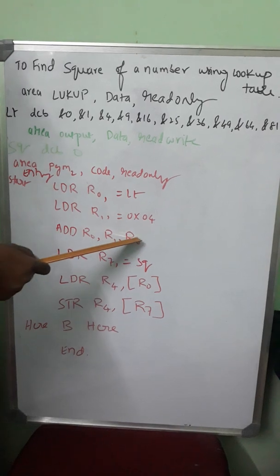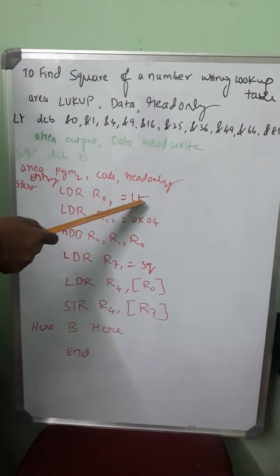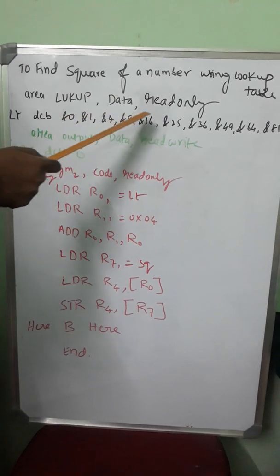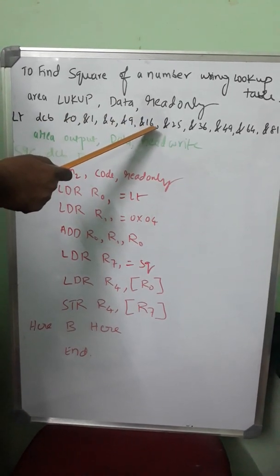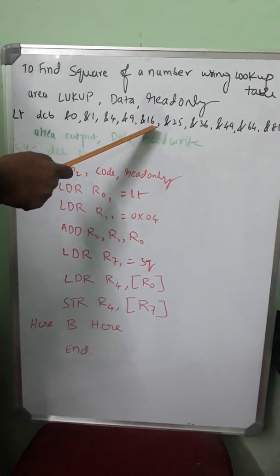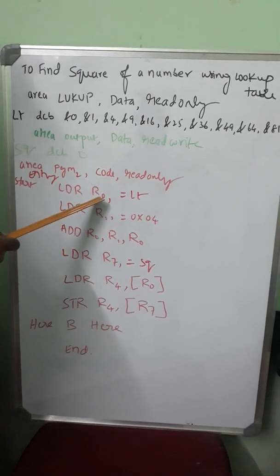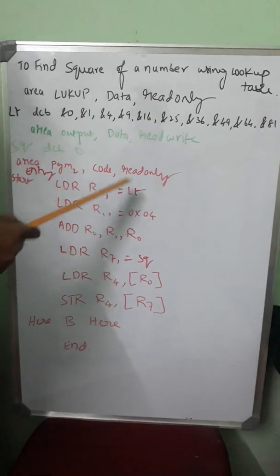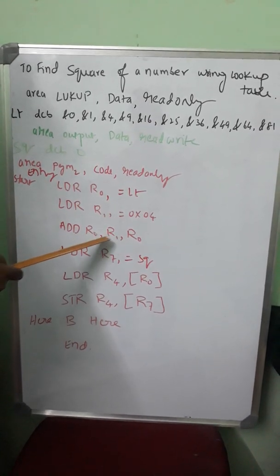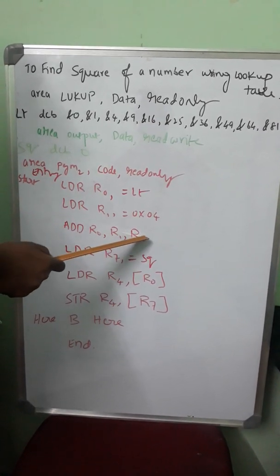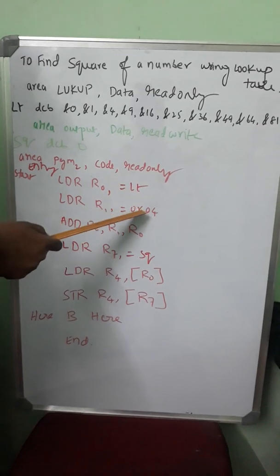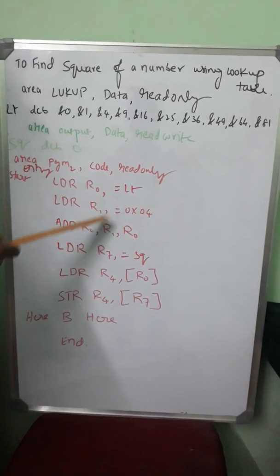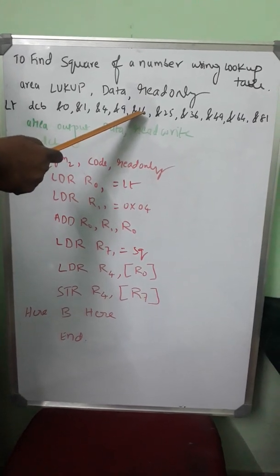ADD R1 to R0, that means 4 is added to LT. LT is in the 0th location, LT plus 4 will take you to the location where 16 exists. Now R0 actually points to the LT plus 4th location where 16 exists. R0 is done with R0 plus R1, that is LT plus 4 will be the new address value pointed by R0, so R0 points to 16, that is LT plus 4.